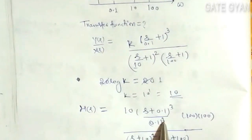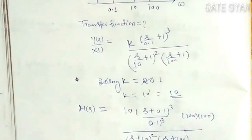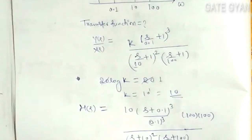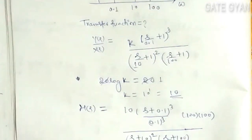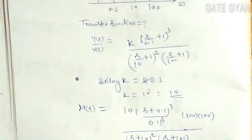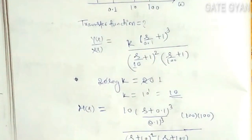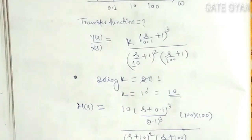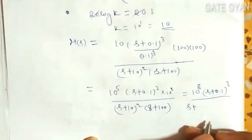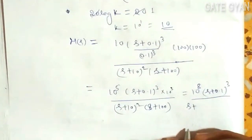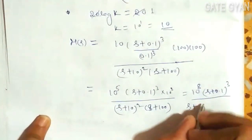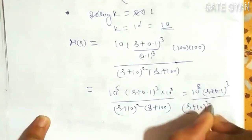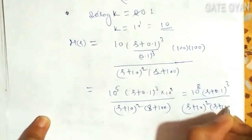And 0.1 cube is going to be 10 to the power minus 3. So, it will become 10 to the power 8, (s + 0.1) whole cube, divided by (s + 10) square times (s + 100).